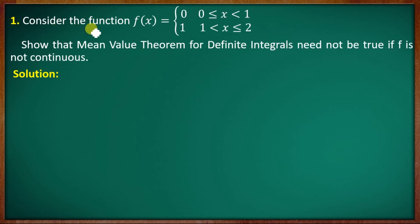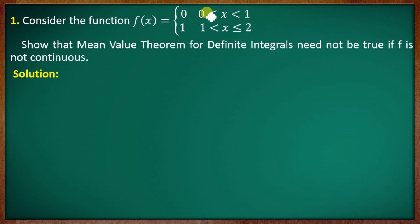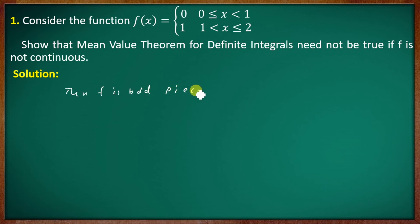Consider the piecewise continuous function on [0, 2]: it is not continuous on the whole closed interval [0, 2] — it is piecewise continuous. The function f is bounded and piecewise continuous on [0, 2], but not continuous, so the mean value theorem for definite integrals need not hold.